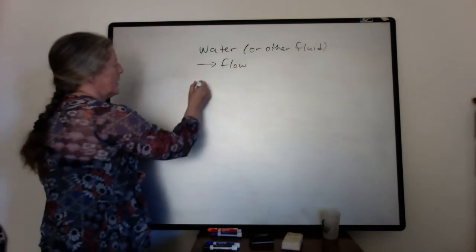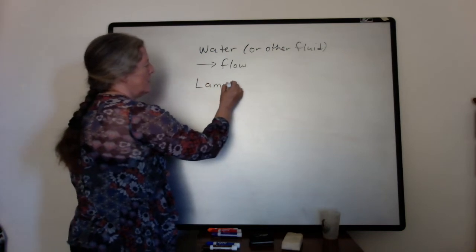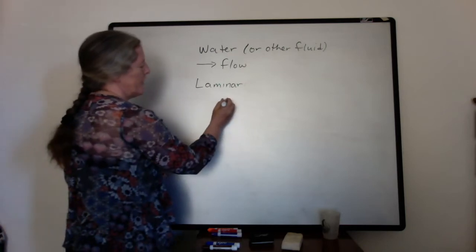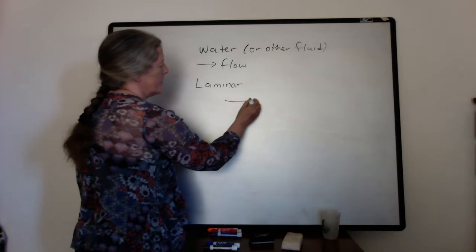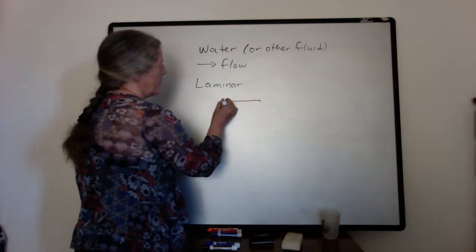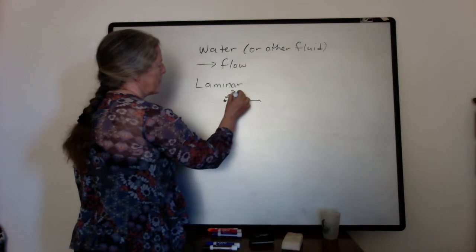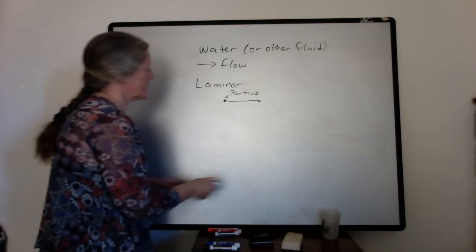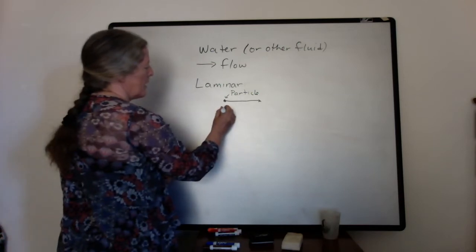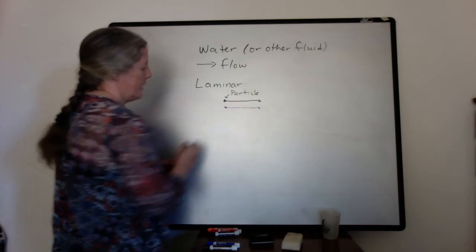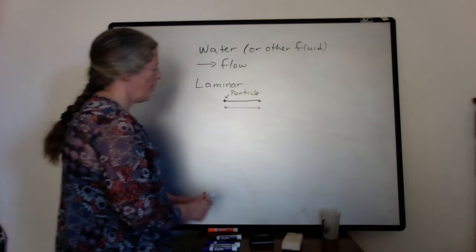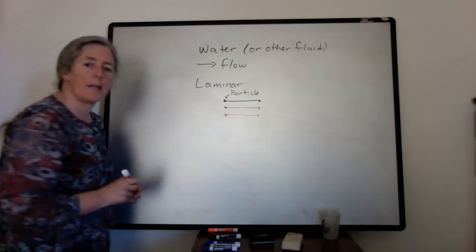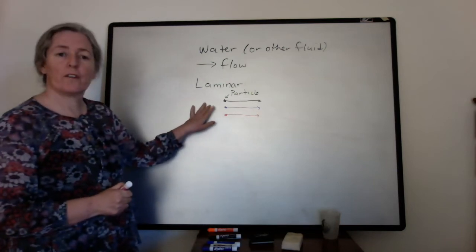In the case of a laminar flow, the individual particles move downstream parallel to each other. So in a laminar flow, this would be a particle, and it would move downstream. If we have another particle here, it would move downstream in a parallel way, and there's actually no mixing of these particles.